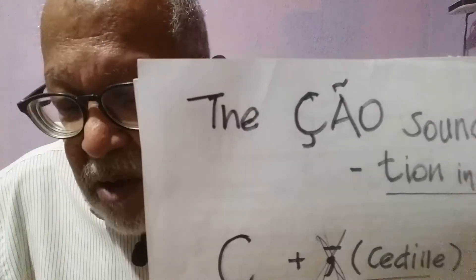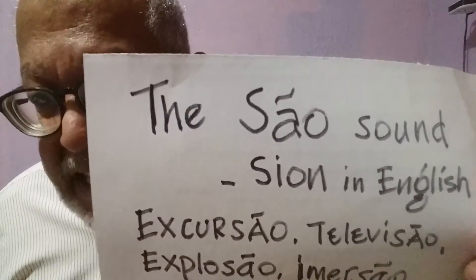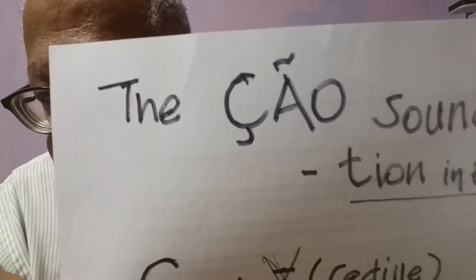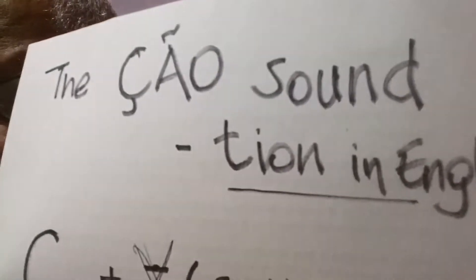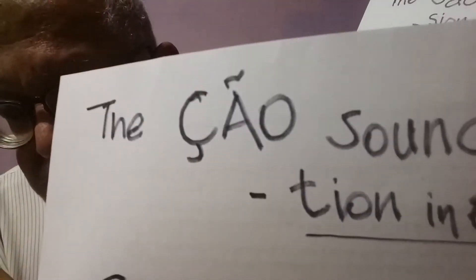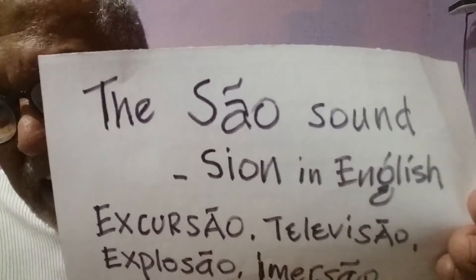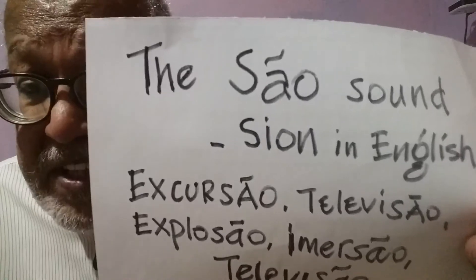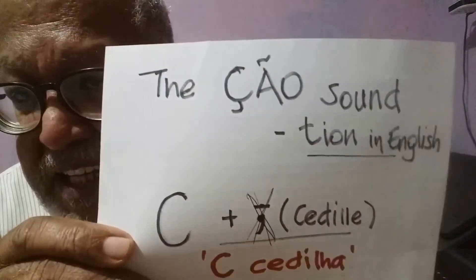We are progressing now to the 'ção' sound, which is very similar — the sound with the C cedilla is pretty much the same. This sound is like the '-shun' in English, like in 'conversation.' In Portuguese we say 'conversa-ção,' conversation. This is essentially the same sound as in words like 'expression.'